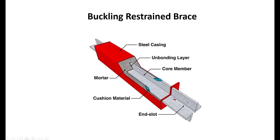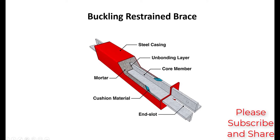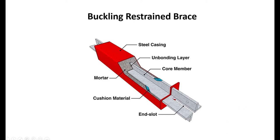As shown in this illustration, the system has a very slender steel core surrounded by a steel casing. Inside the casing, a low-friction specialized mortar is grouted. This casing and mortar combination prohibits the steel core from buckling when it is under compression.